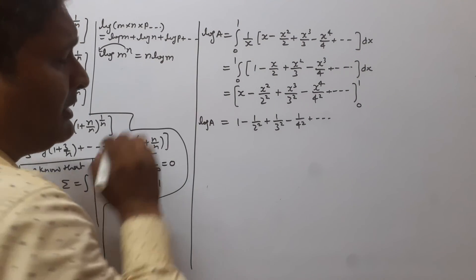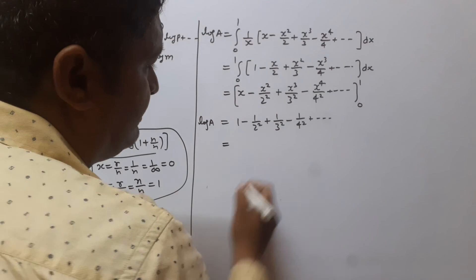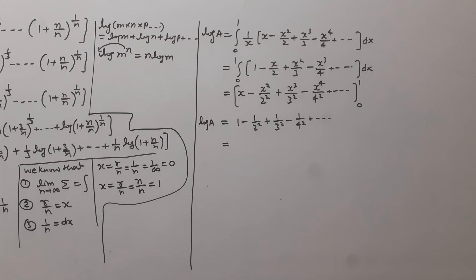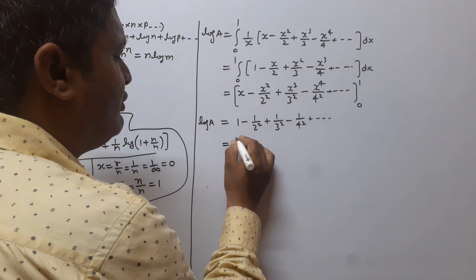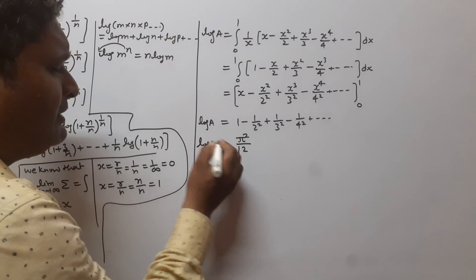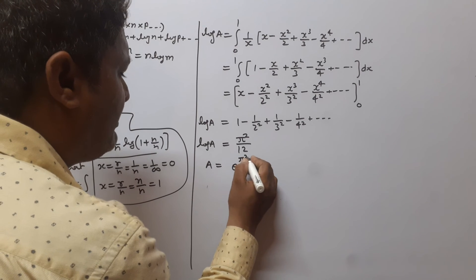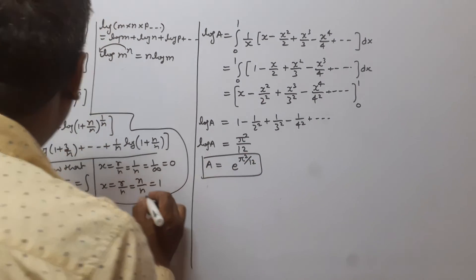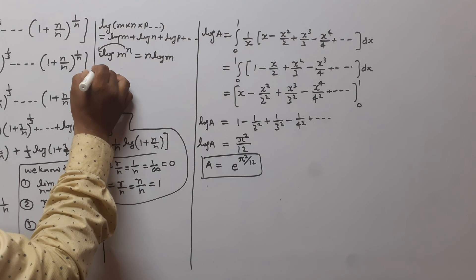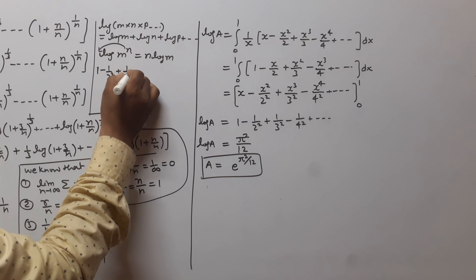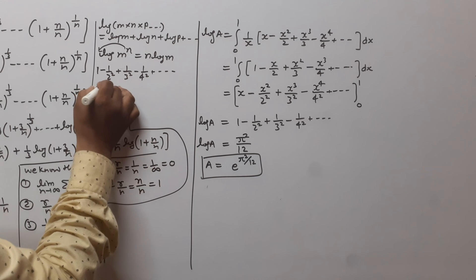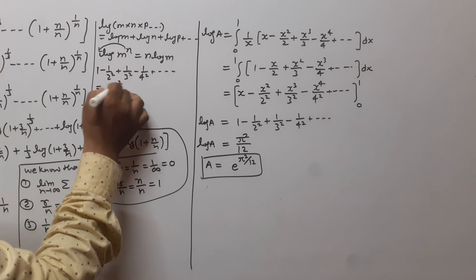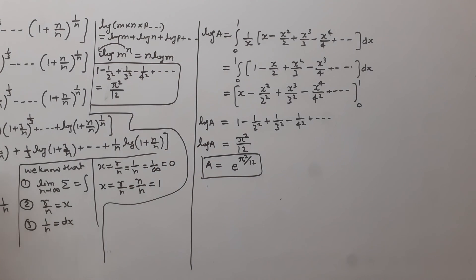So this equals log a. We know that the value of the series 1 − 1/2² + 1/3² − 1/4² + ··· is equal to π²/12. We need to remember this result. Therefore a = e^(π²/12), which is the limit of the given sequence. Thank you.